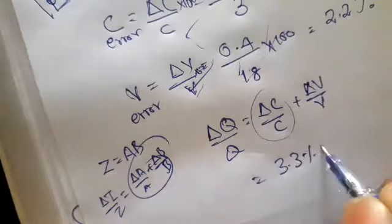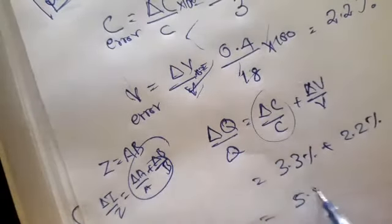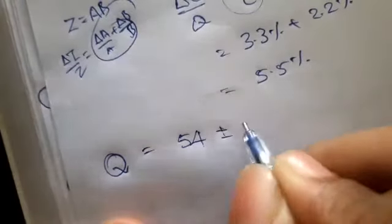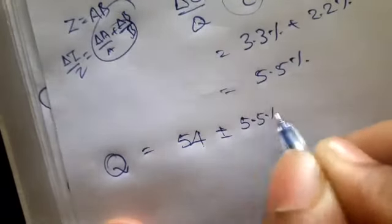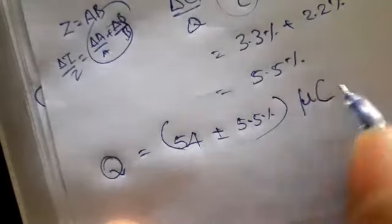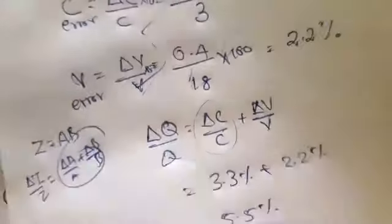What is delta C by C? 3.3 percentage plus 2.2 percentage. The final answer is 5.5 percentage. The error in charge Q equals 54 plus or minus 5.5 percentage microcoulomb. Very easy and all the concepts are clear with this problem from error analysis. Next problem.